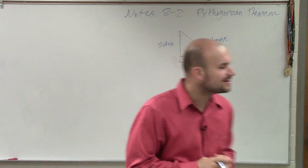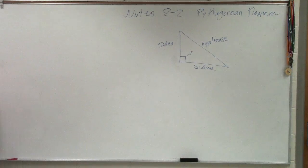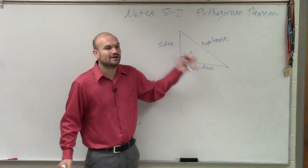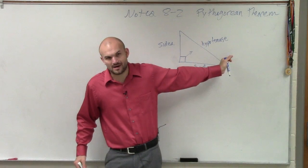And what Pythagorean theorem states is that, let me get another color. The sum of the square of the sides is equal to the square of the hypotenuse.